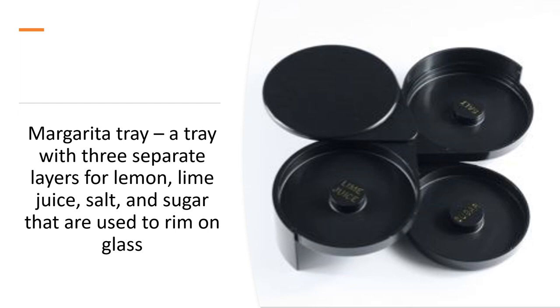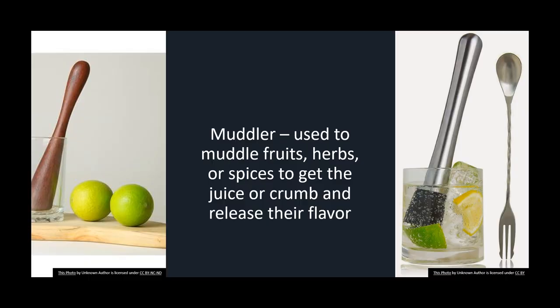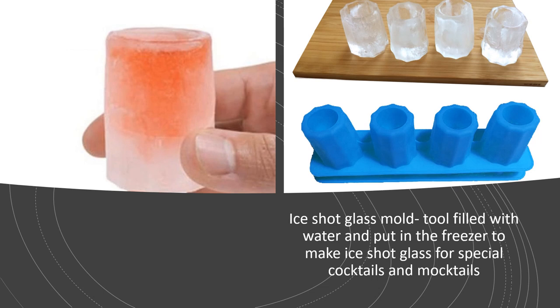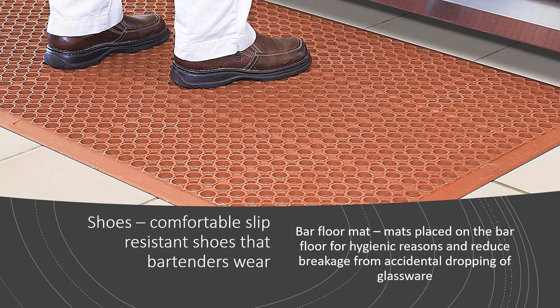A margarita tray is a tray with three separate layers for lime or lemon juice, salt, and sugar that are used to rim glasses. A muddler is used to muddle fruits, herbs, or spices to get the juice or crumb and release their flavor. An ice glass mold is a tool filled with water and put in the freezer to make ice shot glasses for special cocktails and mocktails. A bartender's shoes should be comfortable and slip-resistant. A bar floor mat is placed on the bar floor for hygienic reasons and to reduce breakage from accidental dropping of glasswares.